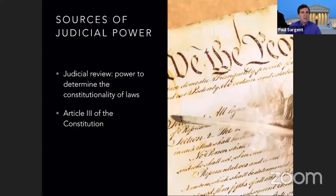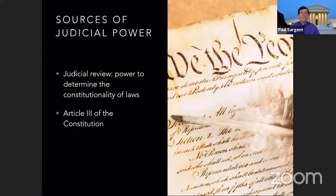The president appoints justices at every level of the federal court system — not just the Supreme Court. As for why there are nine justices: that's simply what they decided. Nine is not a bad number — it's an odd number, which is good because an even number could cause problems with tied decisions. It's also not too many, but not too few. They just landed on nine and it seemed to work.